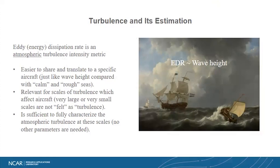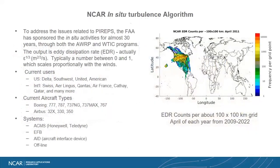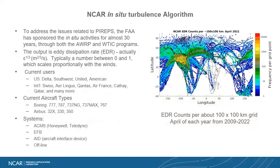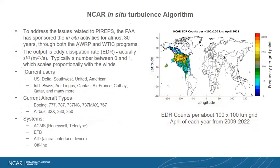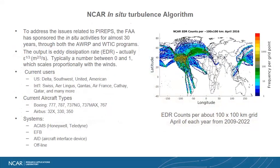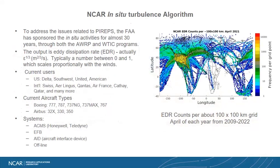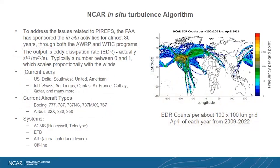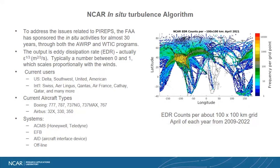EDR is relevant for the scales of turbulence that affect aircraft. Very large and very small scales of turbulence are not felt as turbulence by the passengers or the aircraft, and it's sufficient to fully characterize atmospheric turbulence at these scales — no other parameters are needed. Values are typically between zero and one, and epsilon to the one-third EDR scales nicely with winds: as you double the winds, you get twice the eddy dissipation rate. That's why we use it.